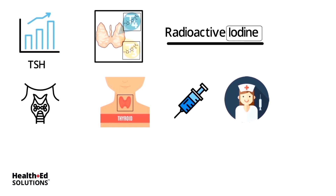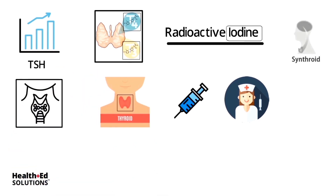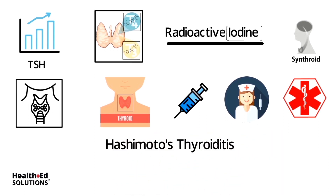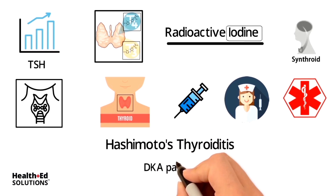Back to hypothyroidism: we're going to do all those supportive measures until we can correct the issue, but obviously these people are going to be on thyroid replacement — levothyroxine, Synthroid. These folks are also going to need to wear a medical alert bracelet so that if they pass out somewhere, it is obvious that they have Hashimoto's thyroiditis as the underlying issue.